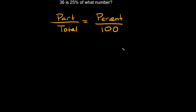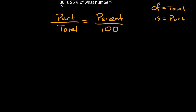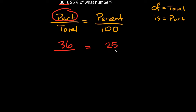Let's try another: '36 is 25% of what number?' First, write down your formula. Remember: 'of' means total, 'is' means part. It says '36 is,' so 36 is the part — put 36 on top. Then 25% — the percent is the easy one, so put 25 where it says percent, over 100. This always stays the same; it's always 100.